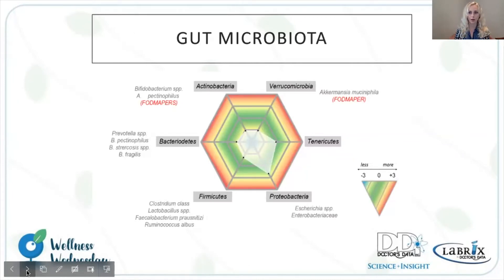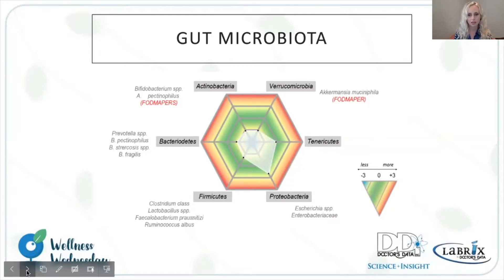Here's an example of the gut microbiota mapped out by phyla. We have the six main phyla here. In the center, we have an example of the patient's microbiome — that white webbing superimposed on the normobiotic reference range. The idea here is to show balance with regards to abundance and diversity of the phyla. Within the different phyla, we do have key players of bacteria, such as the well-known Clostridia and Lactobacillus within the Firmicutes group, and the Escherichia and Enterobacteria within the Proteobacteria group. Abundance and diversity is really key here.